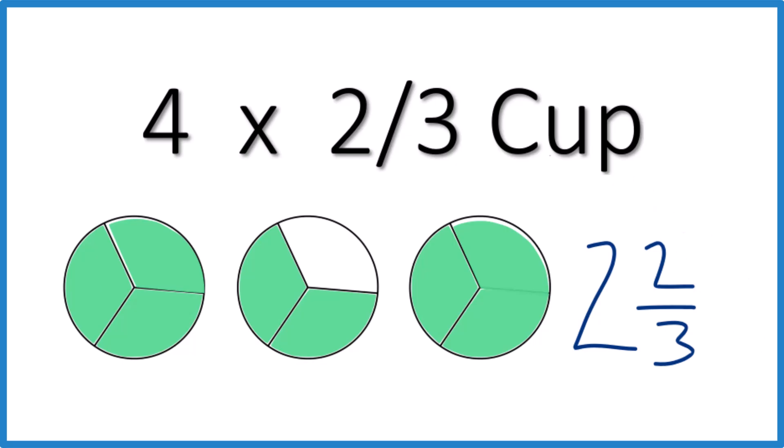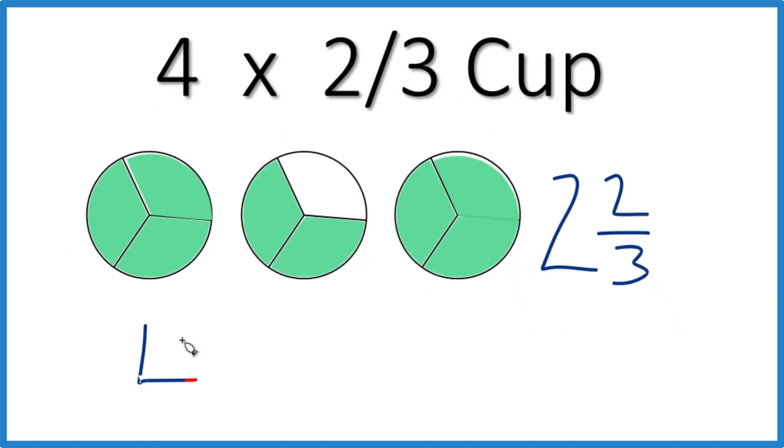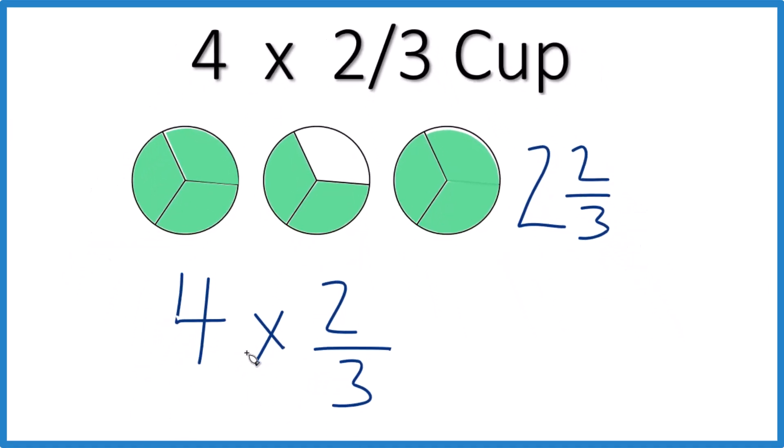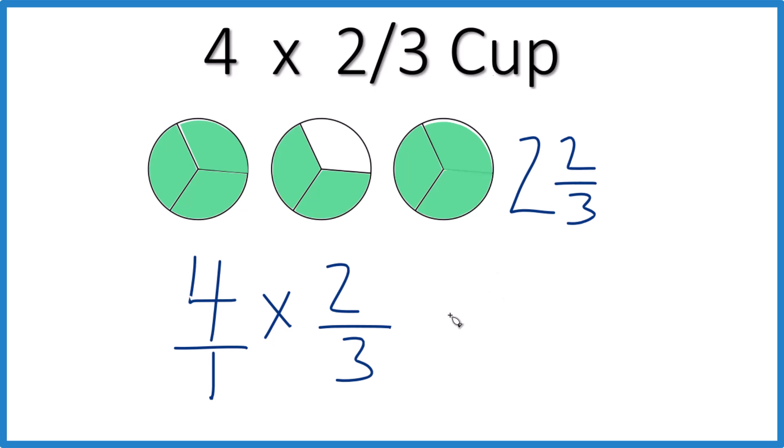Last way you could do it, the math way, stay with me. Four times two thirds. Let's call this four over one, still four. Things line up now with multiplication, four times two is eight, one times three is three.